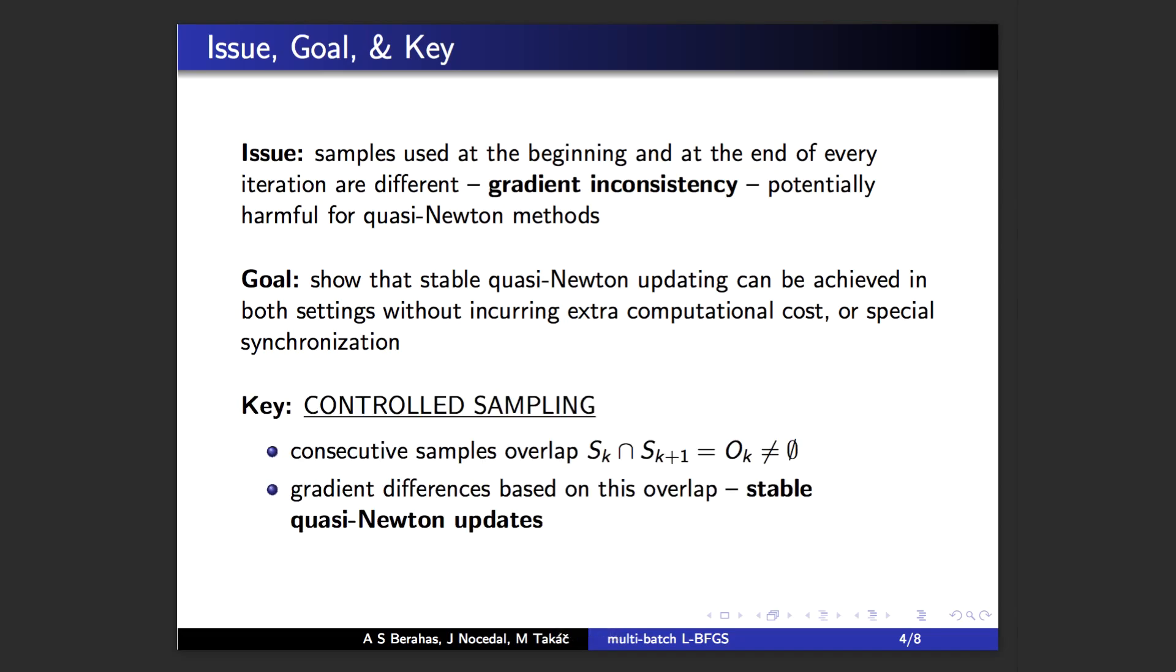The key to our approach is controlled sampling, by which we mean that consecutive samples, or the samples used at consecutive iterations, should overlap. And overlapping consecutive samples can be enforced in the multi-batch setting or expected in the distributed setting with faults. This overlap allows for stable quasi-Newton updates, as the gradient differences can be computed on the same samples.